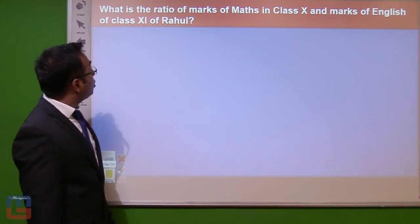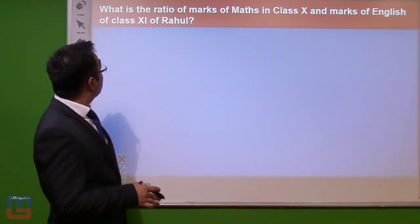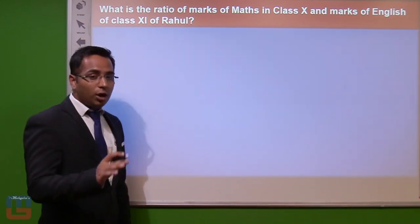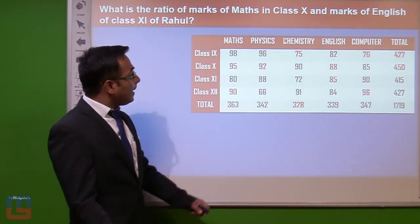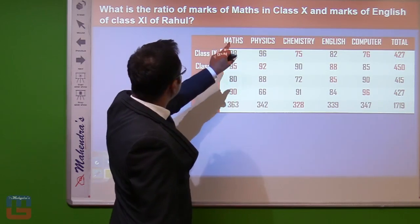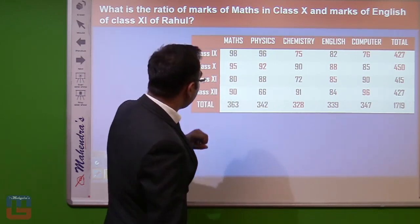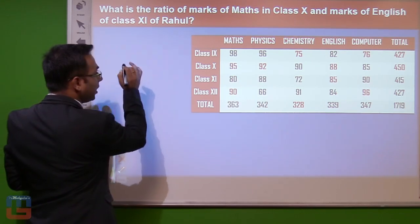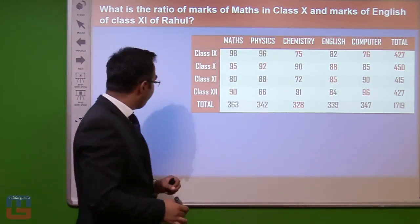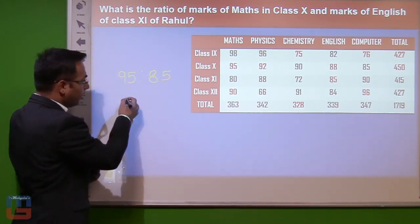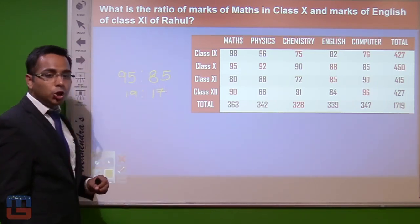Question 3: What is the ratio of maths marks in class 10 to English marks in class 11 of Rahul? Maths marks in class 10 are 95, and English marks in class 11 are 85. Dividing both by 5 gives the ratio 19:17.